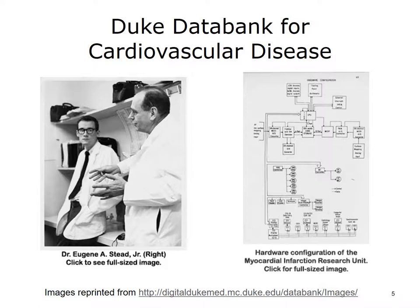The Duke Data Bank for Cardiovascular Disease ultimately became a major part of a cycle of care improvement that started with identifying problems from aggregate data, testing ideas for improvement including in clinical trials, incorporating that new knowledge into the medical literature, and eventually into new care guidelines, adherence to which could then be measured through the Data Bank.